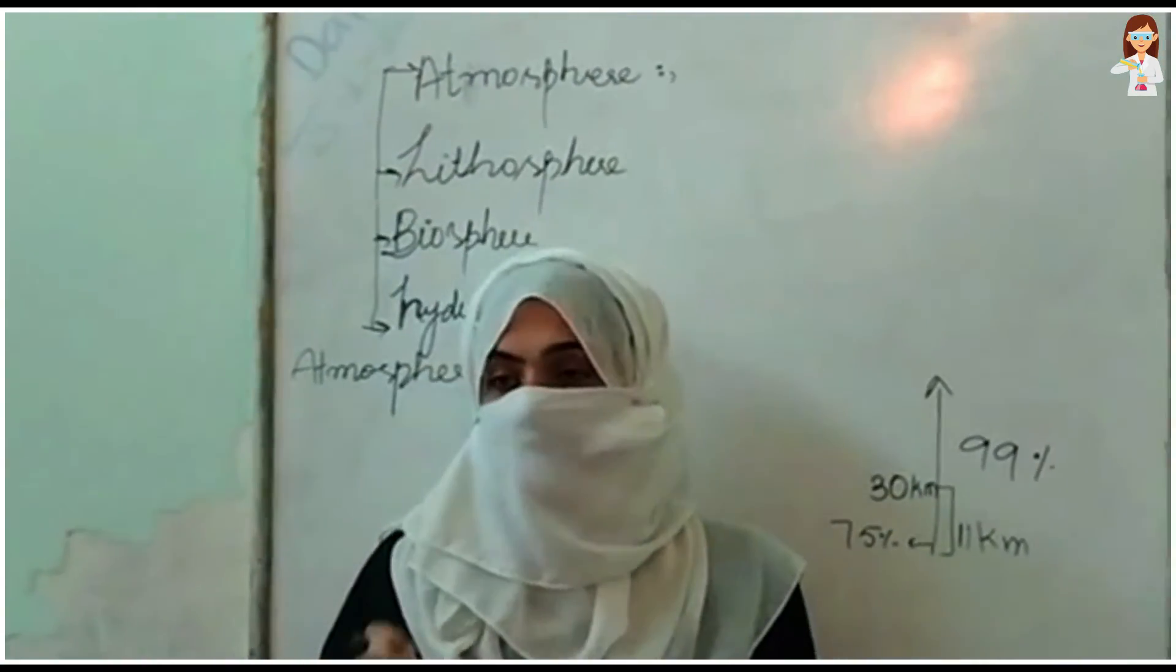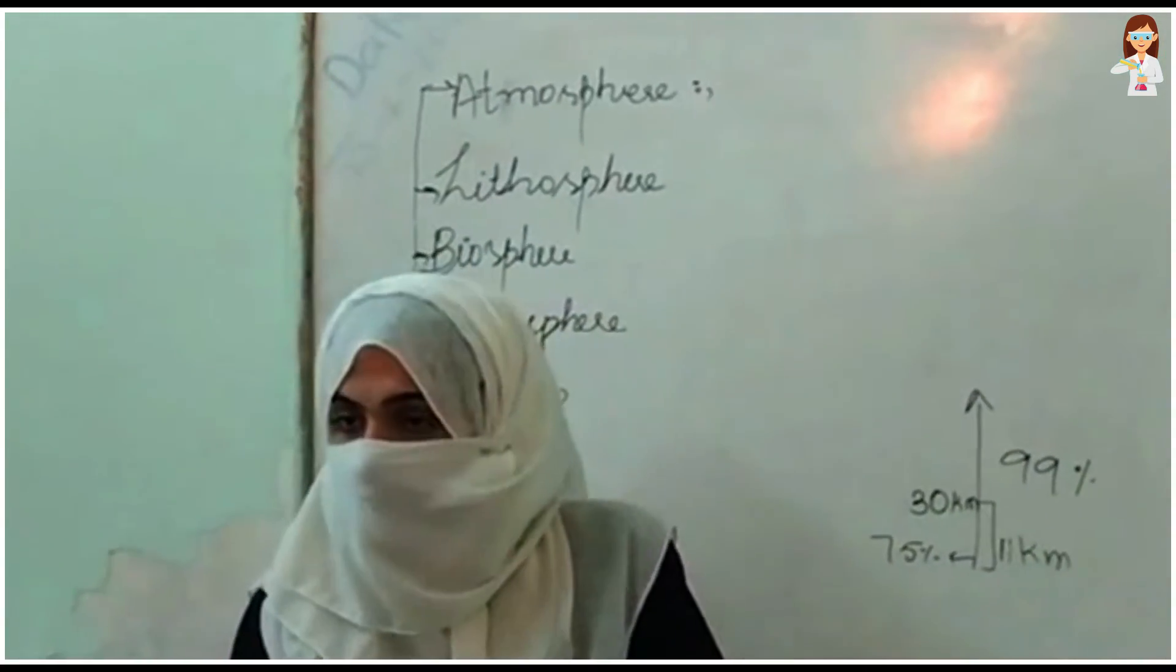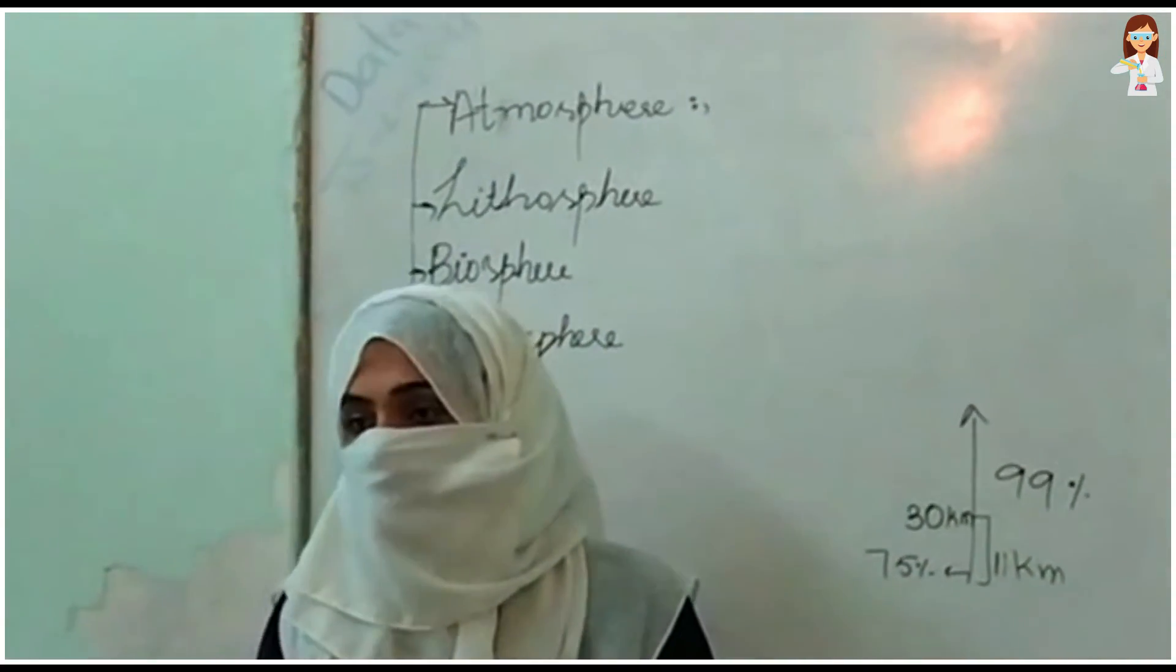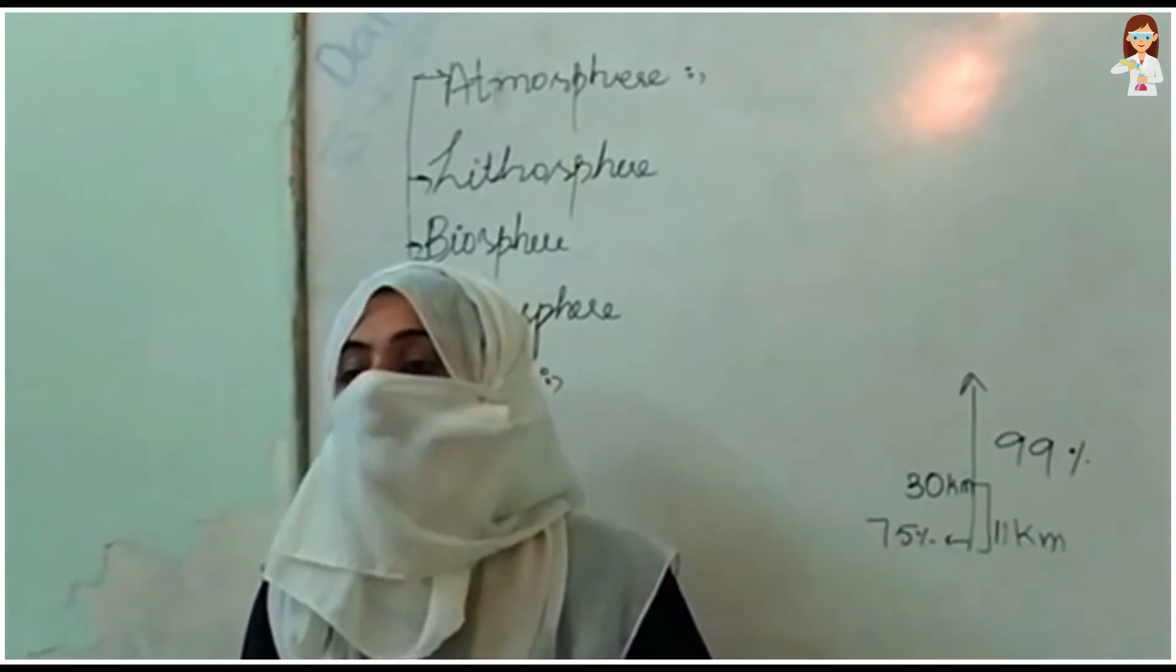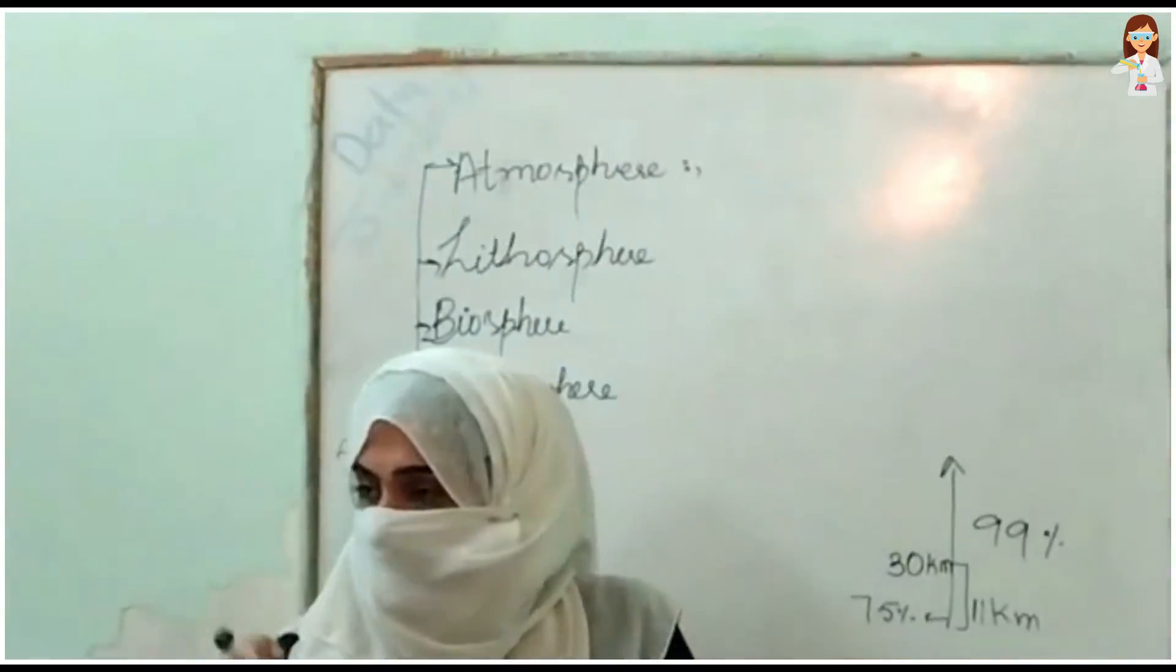This is very important for the MCQs. Nitrogen is 78%. Argon is 0.03%. Oxygen is 20-something%. In which way we have to study the composition of gases?